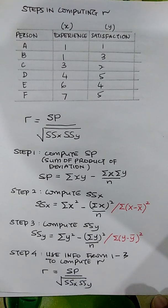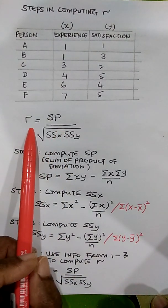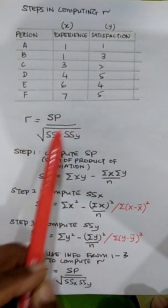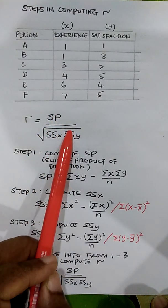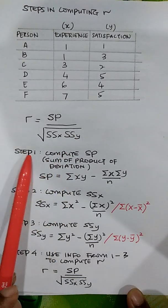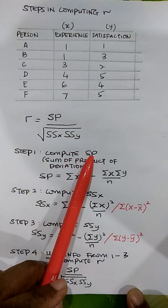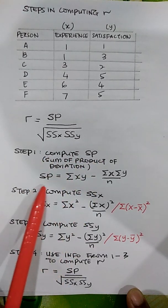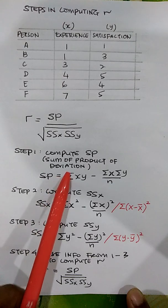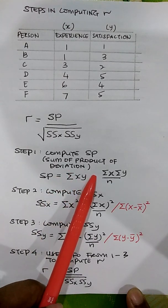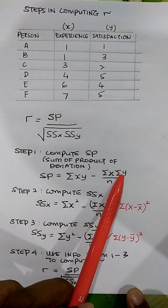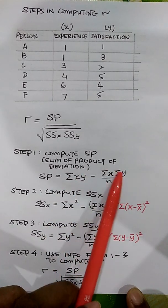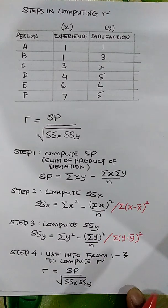What is the formula? r is SP divided by the square root of sum of squares X multiplied by sum of squares Y. The first step is to compute SP — the sum of product of deviation. SP is calculated as: sum of XY minus (sum of X times sum of Y) divided by n.